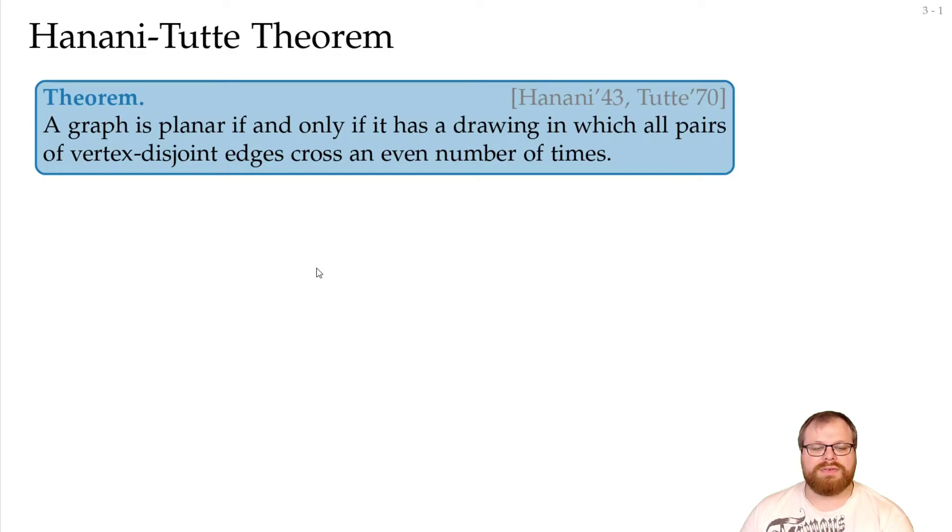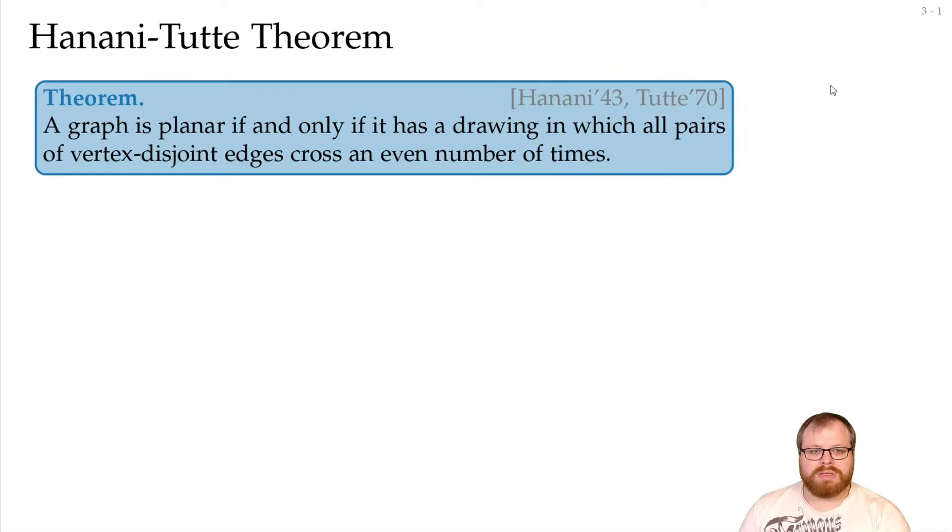And that theorem says, a graph is planar if and only if it has a drawing in which all pairs of vertex disjoint edges cross an even number of times. So one direction is clear. If it's planar, it has a planar drawing, and in a planar drawing, all pairs of edges cross zero times, which is even.